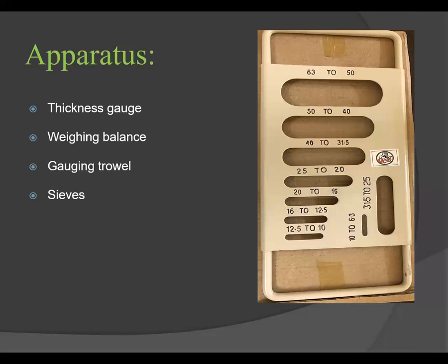The required apparatus includes a thickness gauge — also called a Flakiness Index gauge — a weighing balance machine, trowel, and different sieve sizes. On this thickness gauge plate, different sized slots are present, all dimensions in millimeters: 63 to 50, 50 to 40, 40 to 31.5, 31.5 to 25, 25 to 20, 20 to 16, 16 to 12.5, 12.5 to 10, and 10 to 6.3 mm.